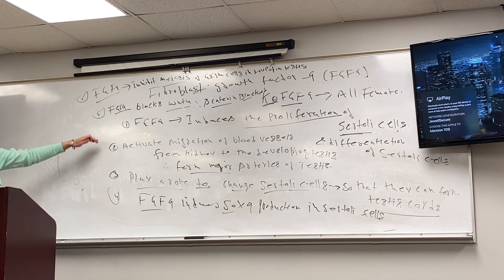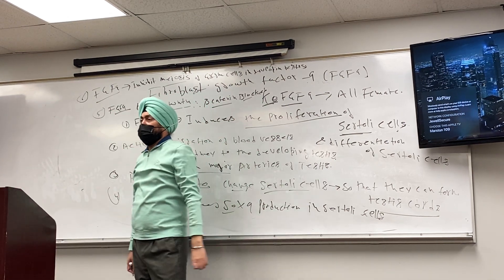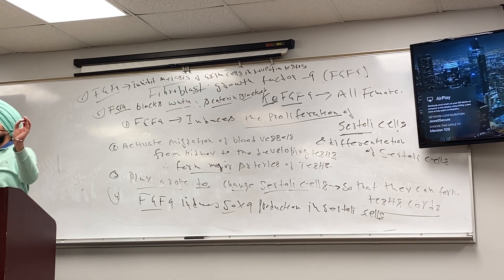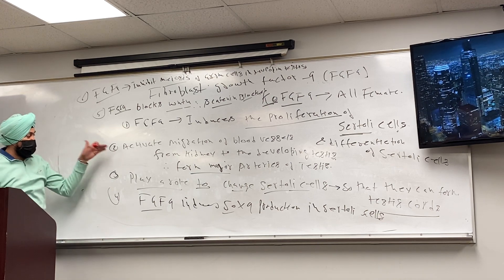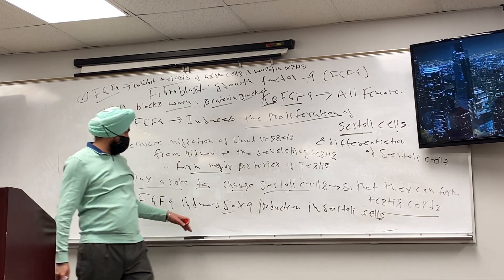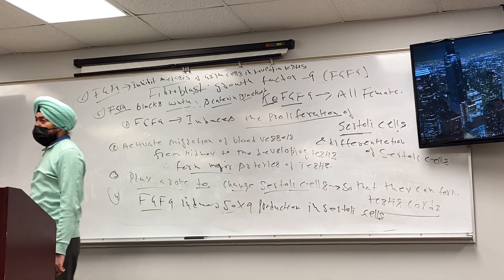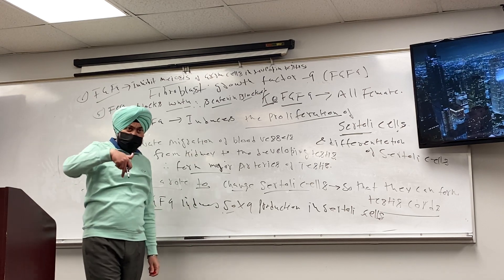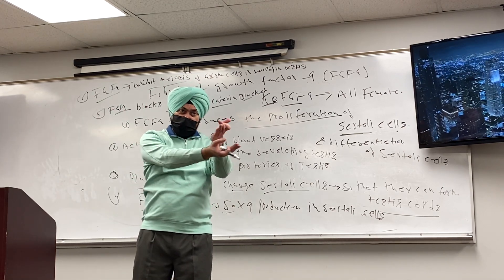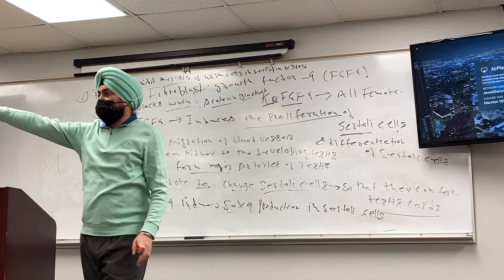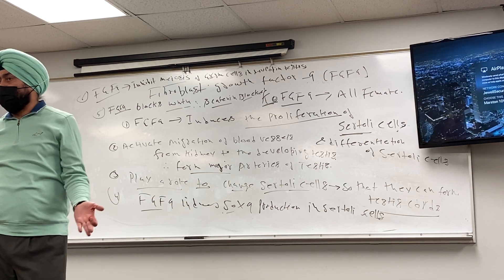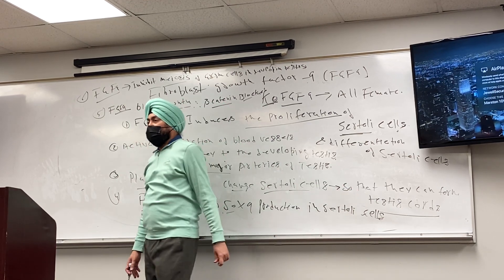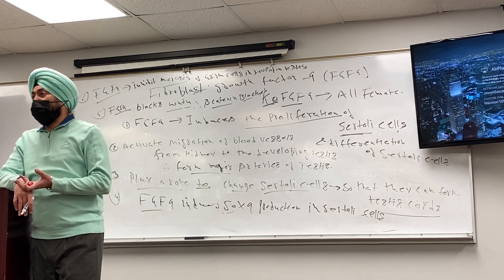FGF9 induces the proliferation of Sertoli cells so you have more Sertoli cells, which can do everything in the testes — they make anti-Müllerian hormone, which is also activated by SOX9. FGF9 induces Sertoli cells to produce SOX9. It causes migration of blood vessels to the developing testes — nearby the kidney is developing, so it attracts blood vessels from the kidney to the testes, forming the blood vessel system of the testes. And it induces Sertoli cells to form testes cords. In this way, FGF9 is regulating how the male gonad is formed.